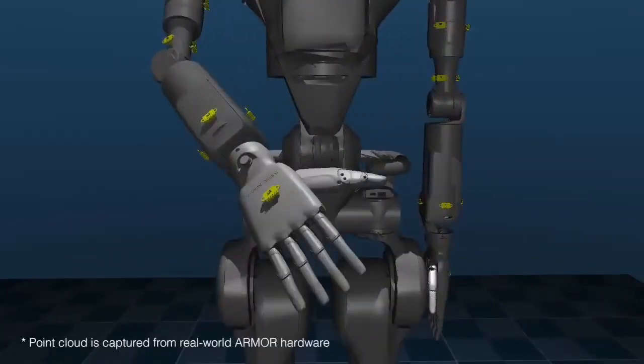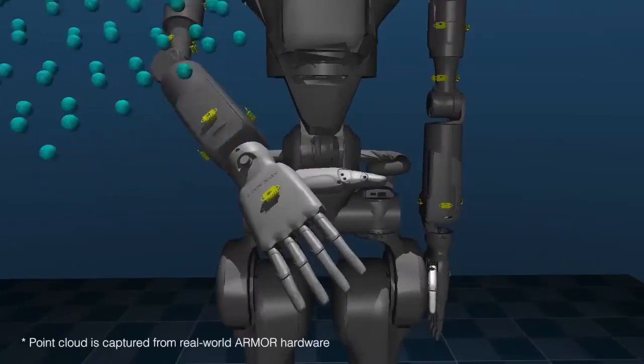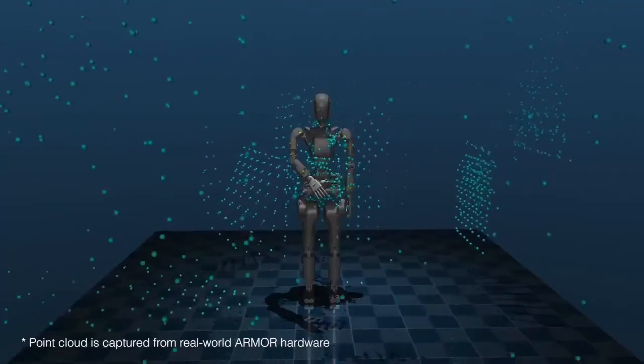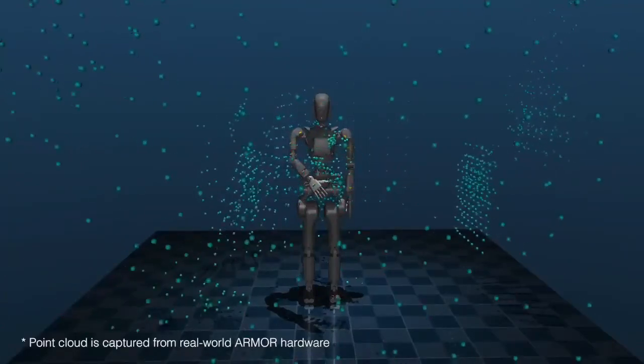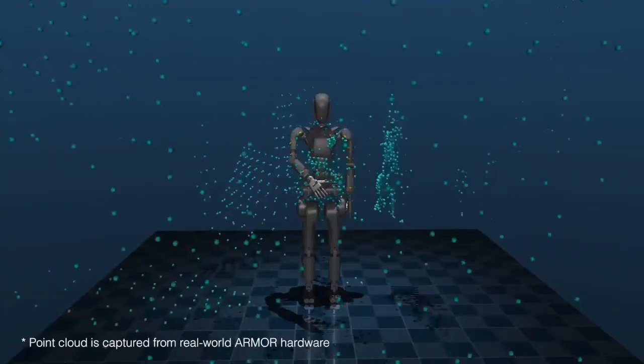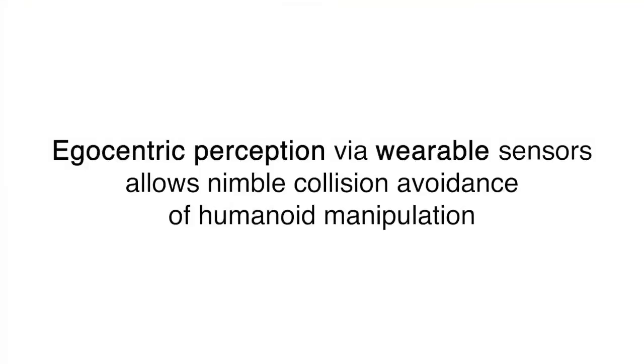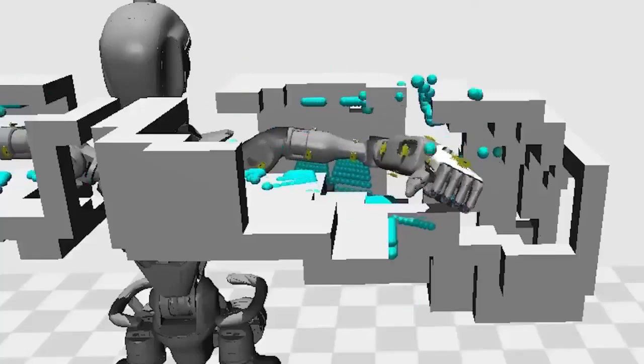We propose ARMOR, a novel egocentric wearable perception hardware and software system for humanoid robots. Our system employs low-profile and distributed depth sensors and enables comprehensive point cloud perception around the robot to minimize occlusion.